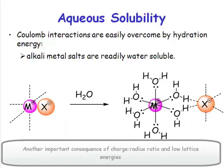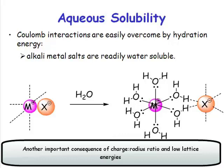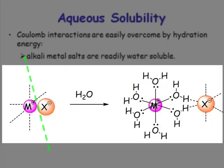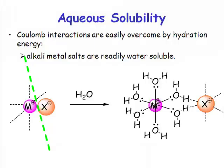It has another important consequence. Because the lattice energies are relatively low, what happens when you dissolve an ionic solid is you break that ionic lattice. You have to break up the ionic lattice in order to dissolve an ionic solid, and the weaker the ionic lattice, the easier it is going to be to break it up. So lithium, sodium, and potassium salts are much more soluble than magnesium or calcium salts because of this lower charge-to-radius ratio — because the Coulombic interactions are weaker.